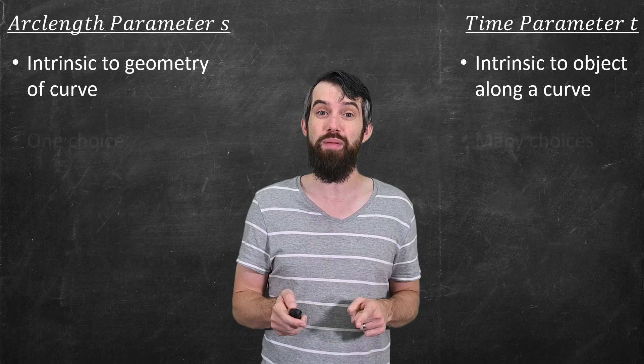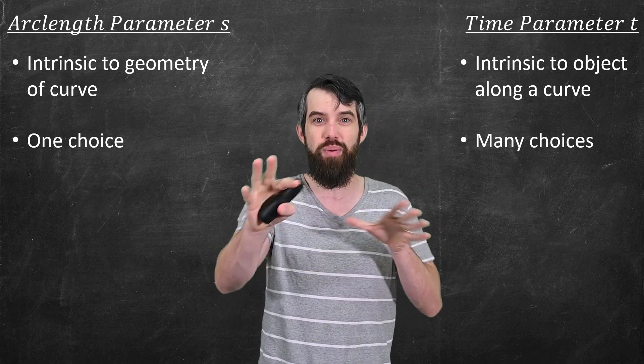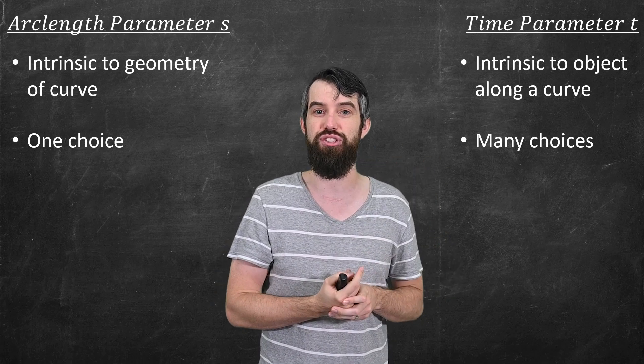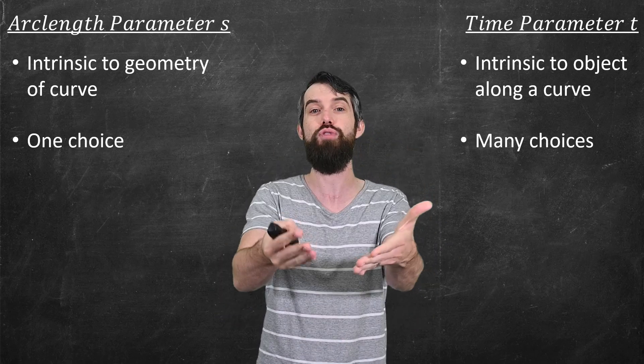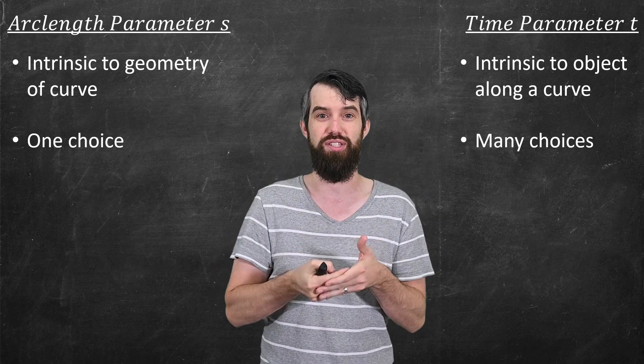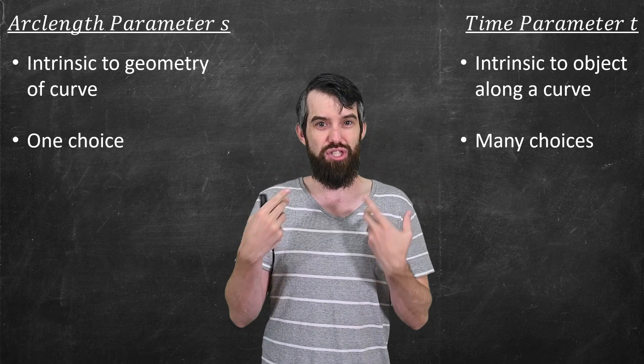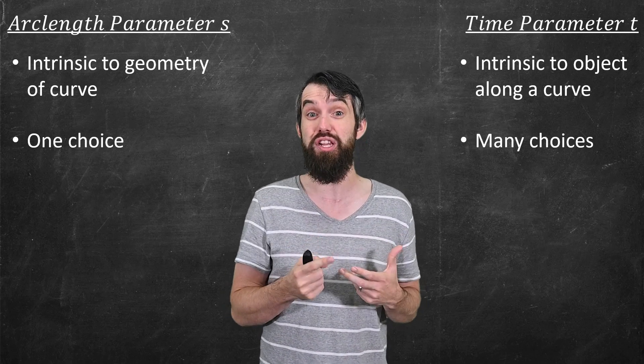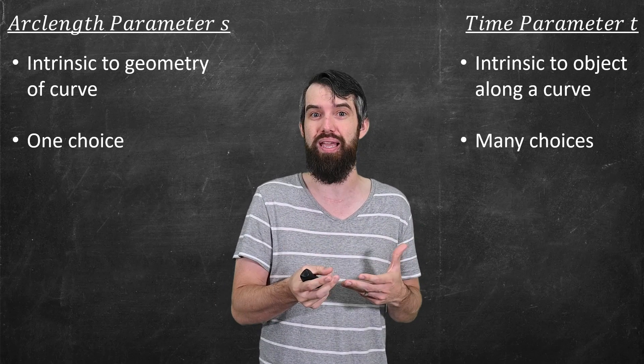So which do you prefer? Well, again, it just depends on what type of questions you're asking. Arc length parameter does have one really big advantage, which is that there is one choice of the arc length parameter. Everybody agrees on what the arc length parameter is. If I say, go and write down some time parameterization, well, it would be up to you. There's many arbitrary choices. You could drive twice as fast as I did, for instance. Although if it was a highway, I wouldn't actually recommend that. Nevertheless, there's a sort of objectivity to the arc length parameter that's very convenient, will be very convenient for making definitions upon which we all agree and aren't dependent on specific choices that we make.